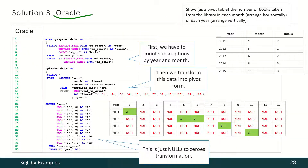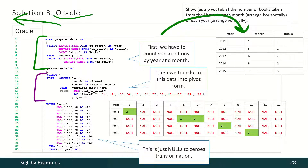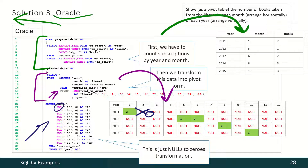The solution for Oracle is exactly the same as for Microsoft SQL Server. First we produce this data, then we use the pivot function to produce the pivoted data. Finally we have to replace nulls with zeros, and we achieve that using the NVL function in this part of the query.